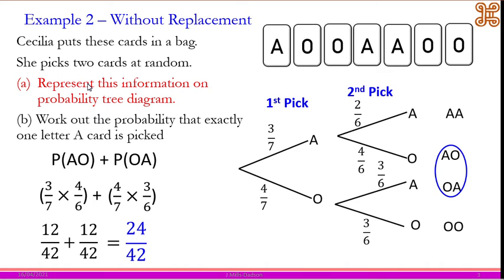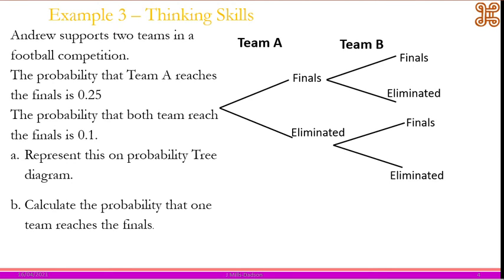The next example is not really a probability tree diagram without replacement, but it's a thinking-skills problem involving a tree diagram. Andrew supports two teams in a football competition. The probability that team A reaches the final is 0.25; the probability that both teams reach the final is 0.1. We need to represent this on a probability tree diagram and calculate the probability that one team reaches the final. We know team A's probability but we are not given the probability for team B, so we need to learn how to work backwards.